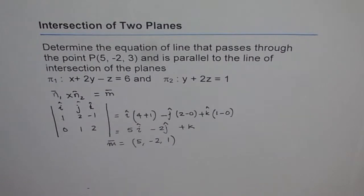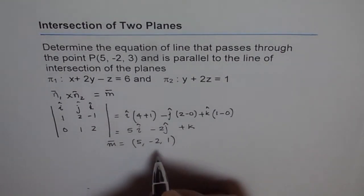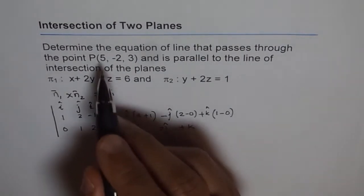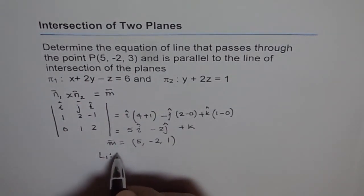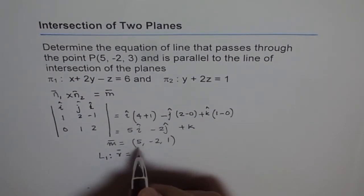And therefore the equation of the line is, when it goes to point, given point, we get equation of the line is r equals to the point given, which is 5, -2, and 3.